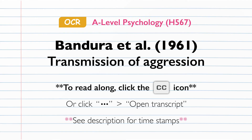For the second stage of the experiment, the children were individually taken to another room and subjected to what the researchers referred to as mild-aggression arousal. They were initially allowed to play with high-end attractive toys, but after around two minutes the experimenter confiscated the toys, telling the child they were reserved for other children to play with. However, they were told they could play with any toys in the next room. In stage three, the children were individually taken to another room containing both aggressive and non-aggressive toys. Examples of aggressive toys included a three-foot-tall Bobo doll identical to the one used in the aggressive condition, a mallet, a pegboard, and dart guns.